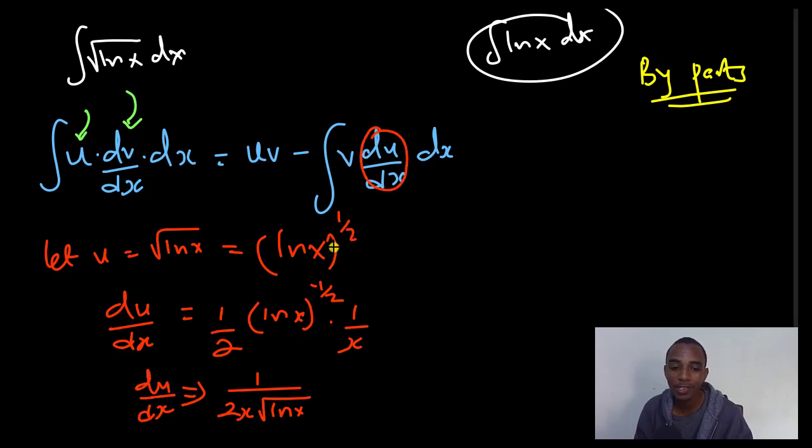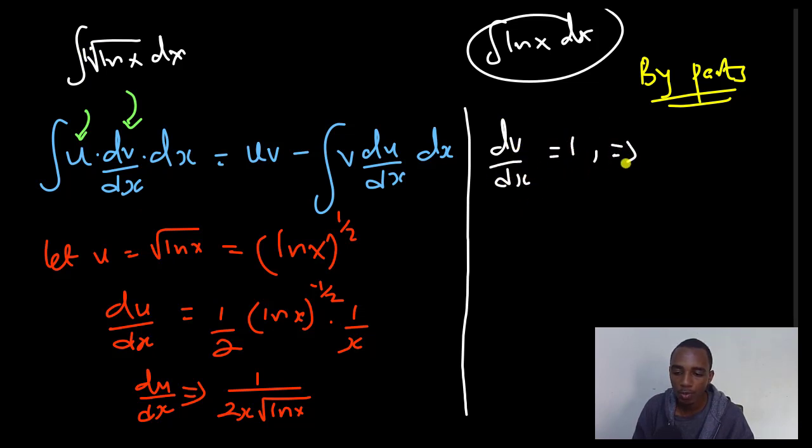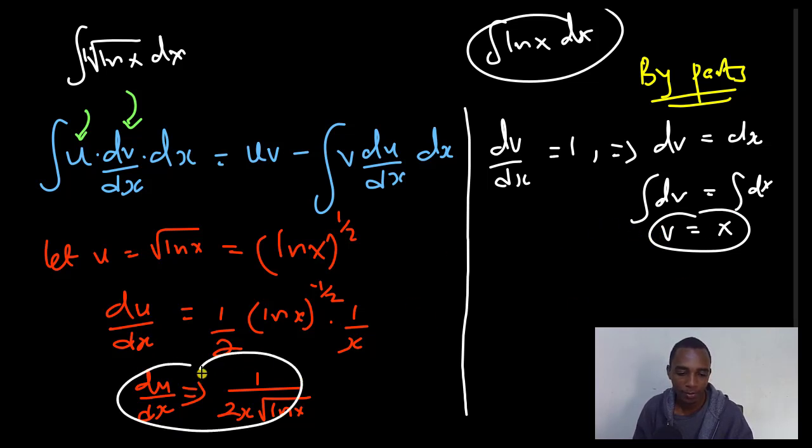Next, I have to find the value of v from dv dx. dv dx is just 1 here. So dv dx equals 1, which implies that dv equals dx. And if I take integrals on both sides, you can see that v is just going to be x. I assume the constant of integration to be 0 for this case. So there we have our value of v and our value of du dx.